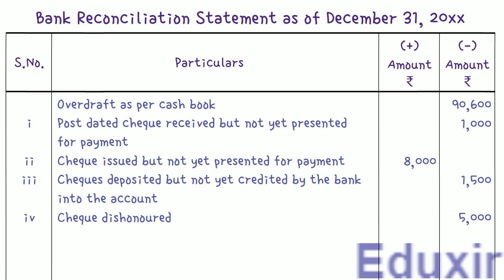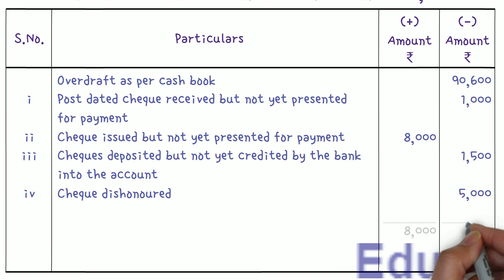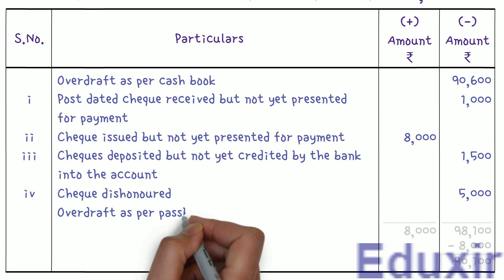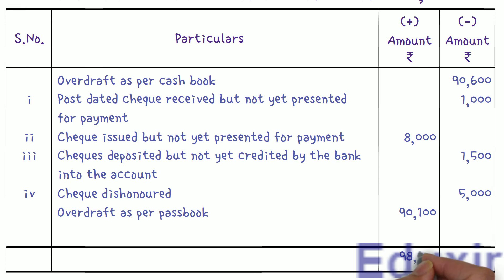We have completed the recording of all the details into the bank reconciliation statement. The next step is to find the balance as per the passbook. The total of all entries in the plus amount column is Rs. 8,000. The total of all entries in the minus amount column is Rs. 98,100. Subtracting Rs. 8,000 from Rs. 98,100 gives Rs. 90,100. This is the passbook overdraft balance. We write 'Overdraft as per passbook' and enter Rs. 90,100 in the plus amount column. Both the plus and minus columns now total Rs. 98,100, confirming the solution is complete.